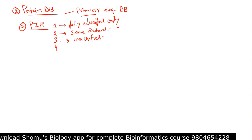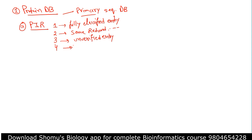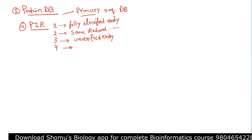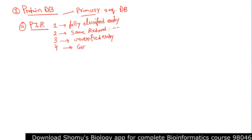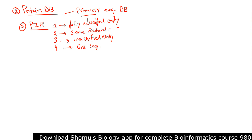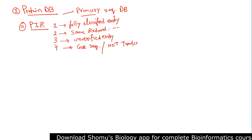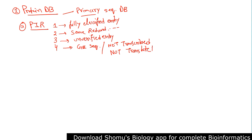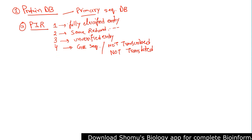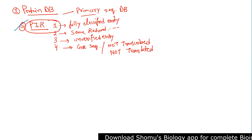PIR-4 contains artificial sequences — genetically modified, genetically engineered sequences. These sequences are not transcribed and not translated; no transcription, no translation of the sequence. Those are placed under PIR-4. So PIR-1 is the purest form — information is available in the purest form in PIR-1.